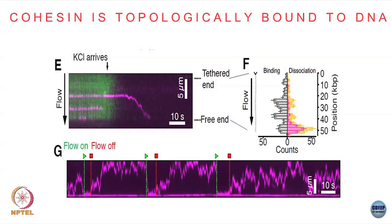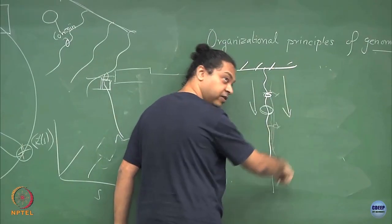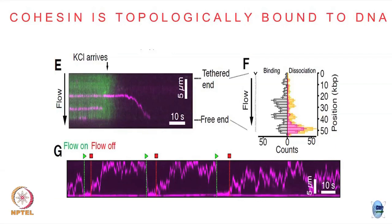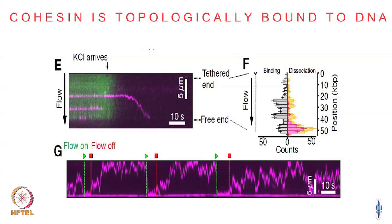You can confirm this: if you cap the free end of the DNA as well, the cohesin does not fall off. These experiments are done in nanofluidic channels with fluid flow to push the cohesins to one end. When flow is on, all cohesins accumulate at the capped end; when flow is turned off, they return to doing a diffusive random walk. This can be repeated — it has extremely long lifetimes. So it is not a chemical bond that binds and unbinds; it is a topological bond which, once bound, stays on for a very long period of time.